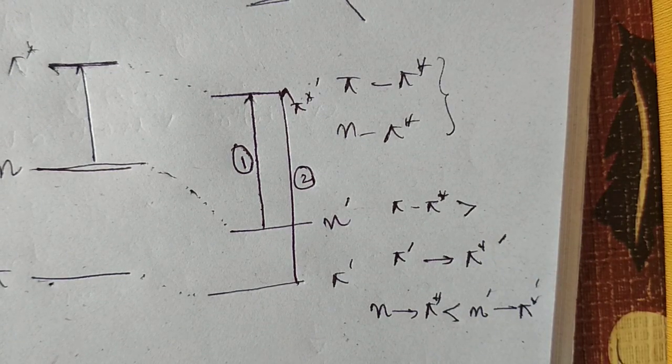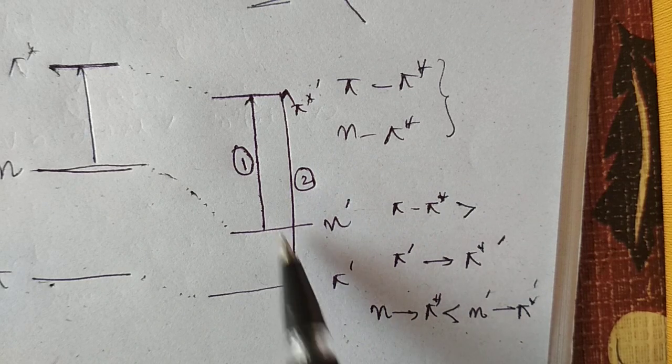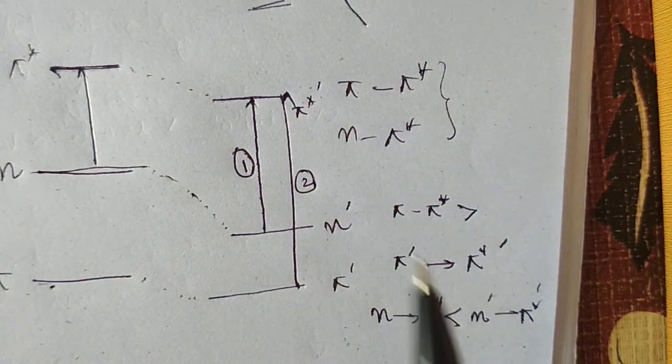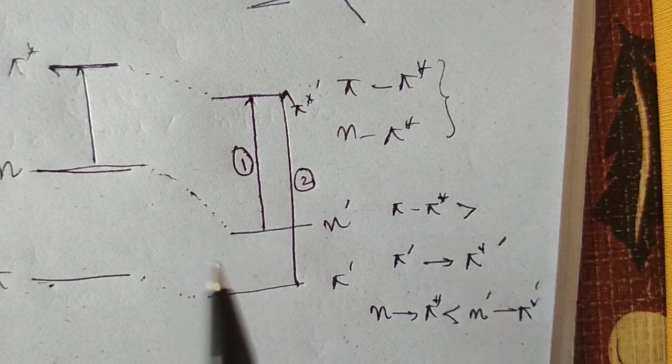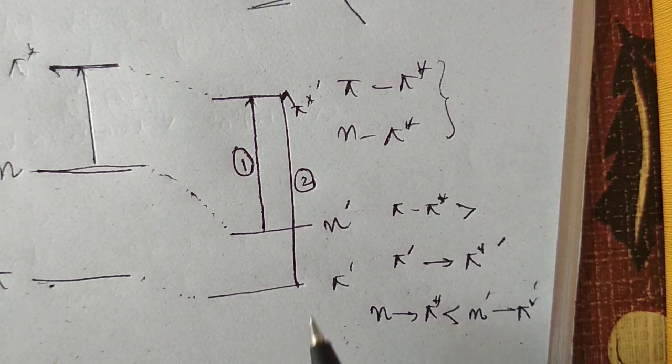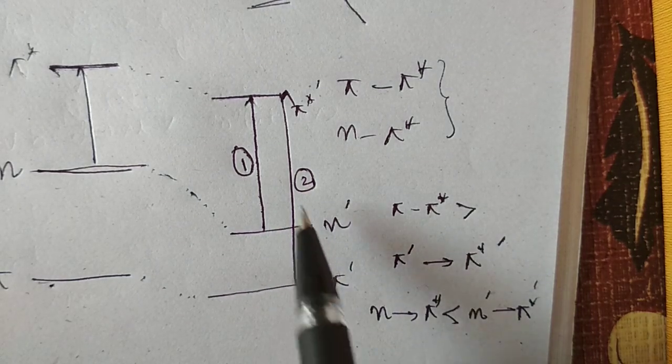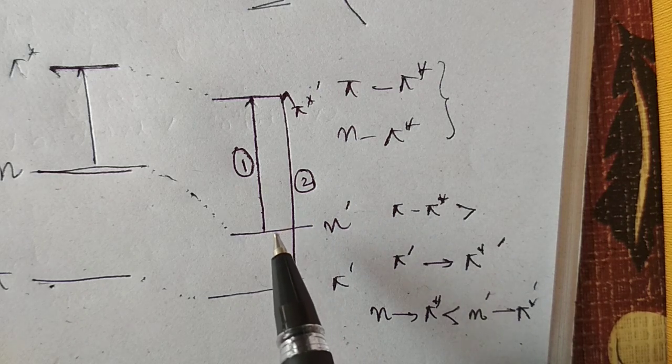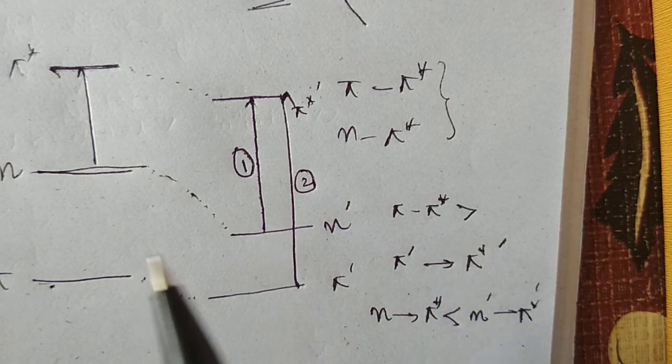Since the energy gap for pi to pi star has decreased, we see a red shift. But for the n to pi star transition, since the energy gap has increased, we have a blue shift.